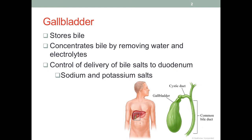Upon certain stimulation, like when we ingest food — especially foods rich in protein and fat — it will increase the release of the hormone CCK, or cholecystokinin. The elevated CCK level will trigger the contraction of the gallbladder, leading to the release of bile into the duodenum.